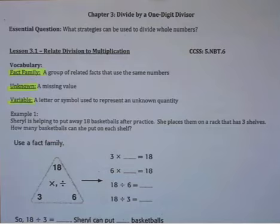The second vocab word is unknown, and that's a missing value. That's usually what you're trying to solve for in an equation. And the last vocab word is a variable, and this is a letter or symbol used to represent an unknown quantity.